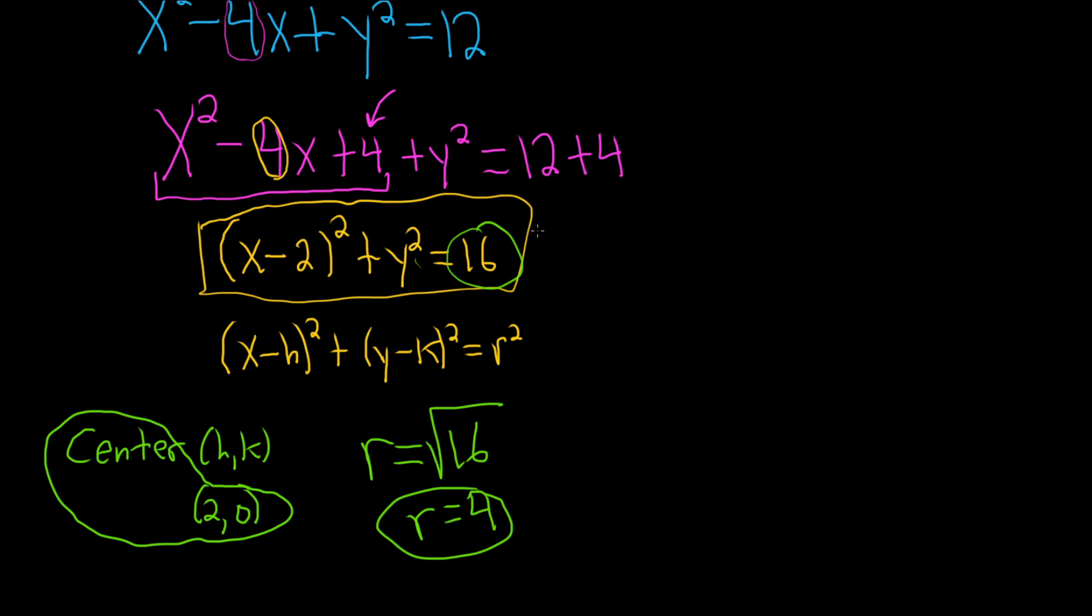Okay, we have the standard form, we have the center, we have the radius. The only thing missing is a sketch. So here's the y-axis, here's the x-axis. So 2, 0 is right here.